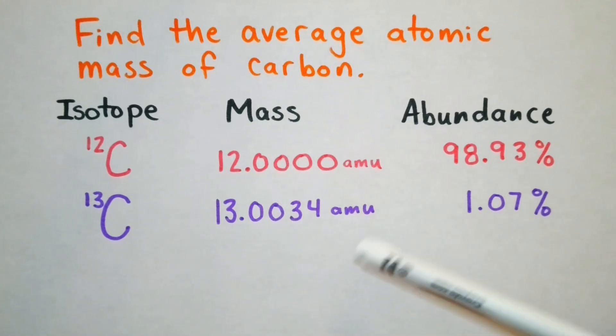Carbon-13 has an atomic mass unit of 13.0034 and a relative abundance of 1.07%. So let's get started with the calculation.